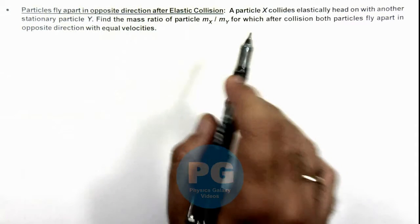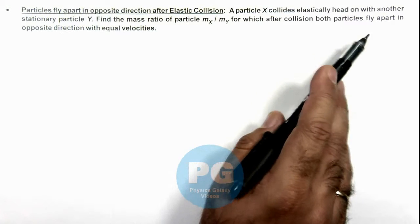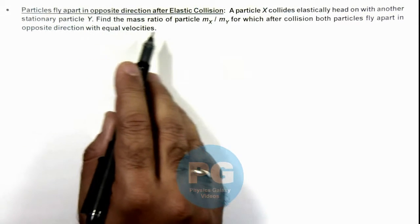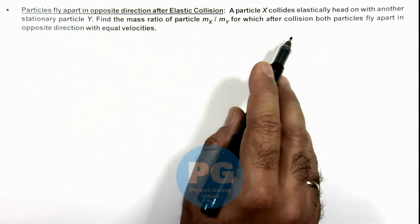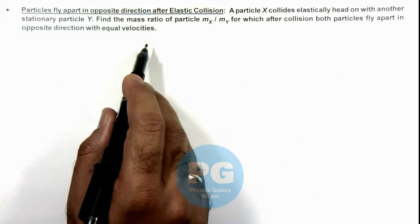Here we are given that a particle X collides elastically head on with another stationary particle Y. And we are required to find the mass ratio of particle mx over my, for which after collision both particles fly apart in opposite direction with equal velocities.